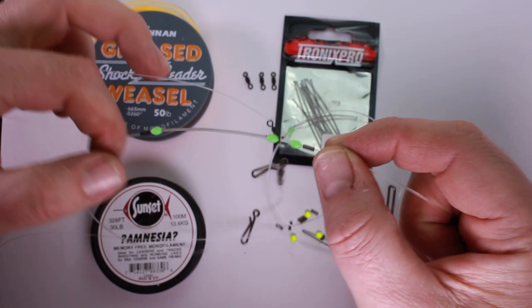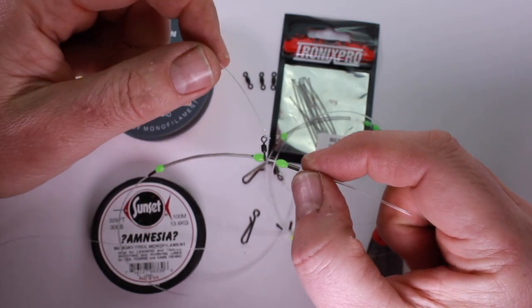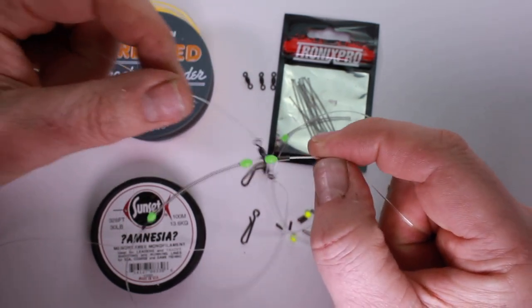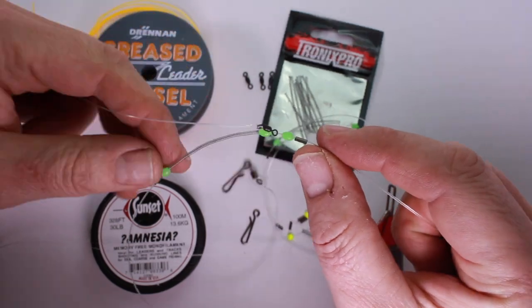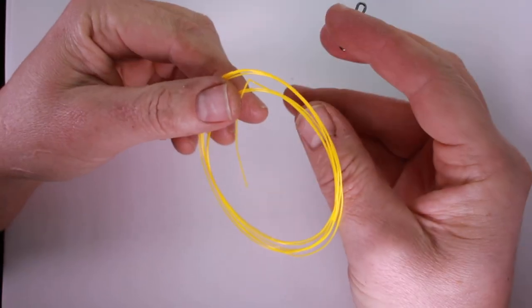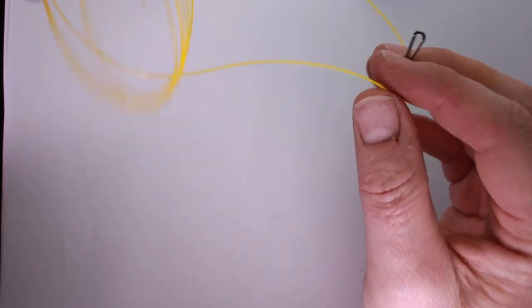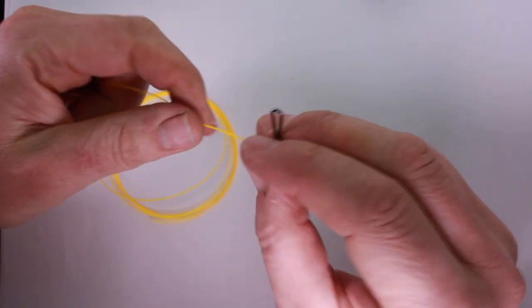So you do need some of these springs. If you're struggling to get hold of them I'll pop some in the post to you. Maybe the first sort of two or three people that request it in the comments. So cut off a meter or so of the main body of rig. As I say we're using the 50 pound grease weasel for this one.